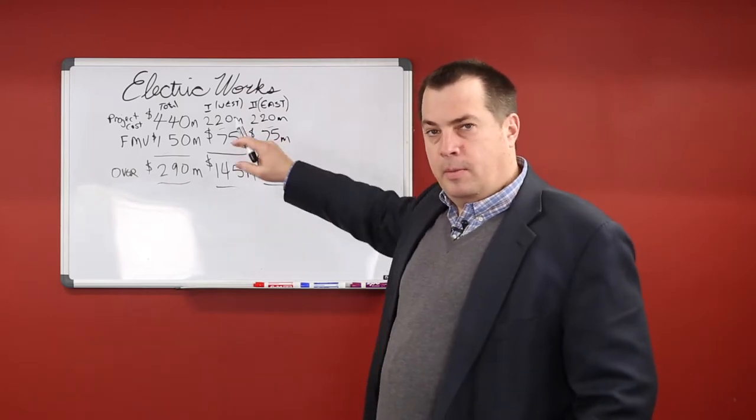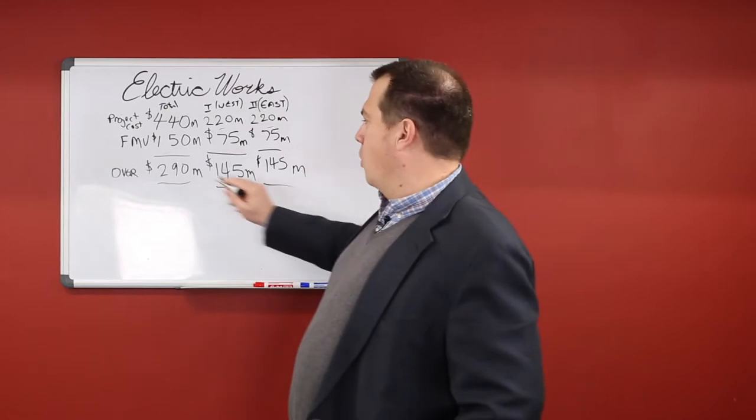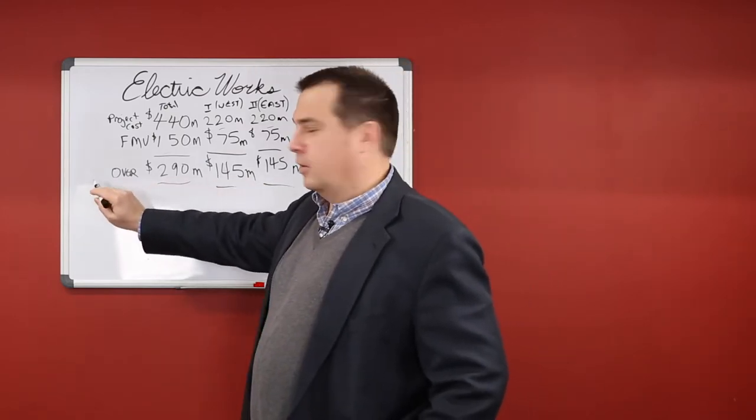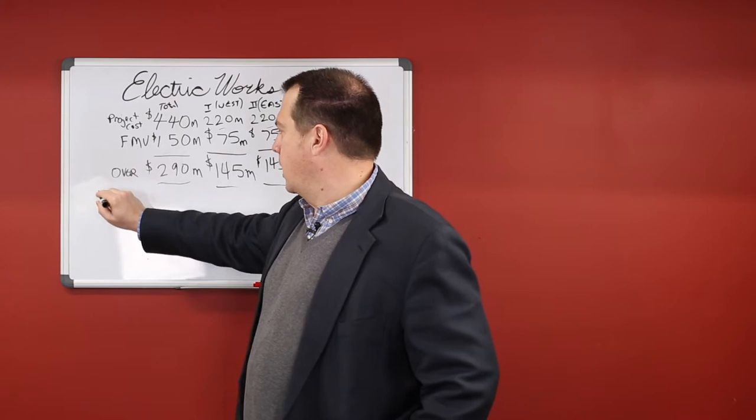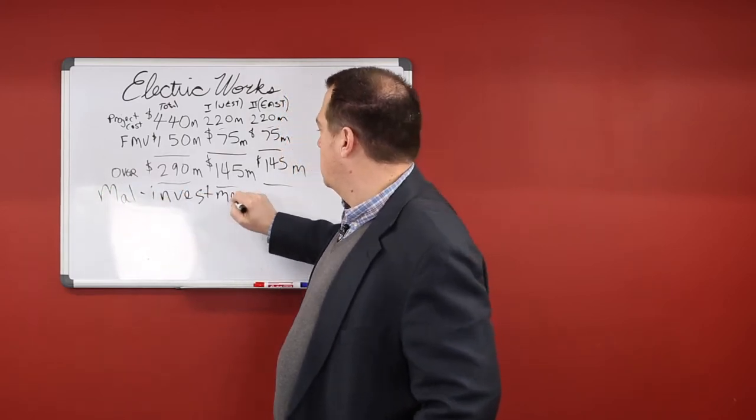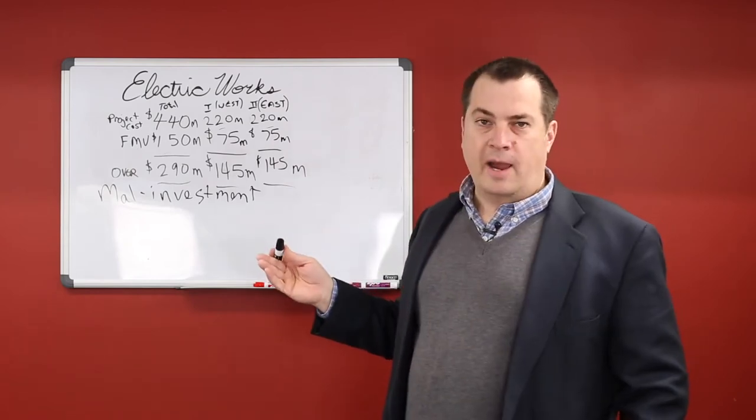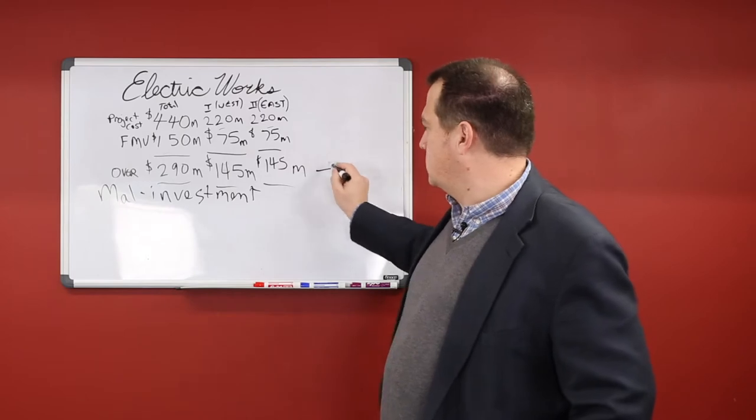I'm going to erase this, and I'm going to put up some of the details on the capital stack. This overpayment is something that we talked about Mises earlier. Mises would call that overpayment malinvestment. This is money that is not used to its highest economic potential.